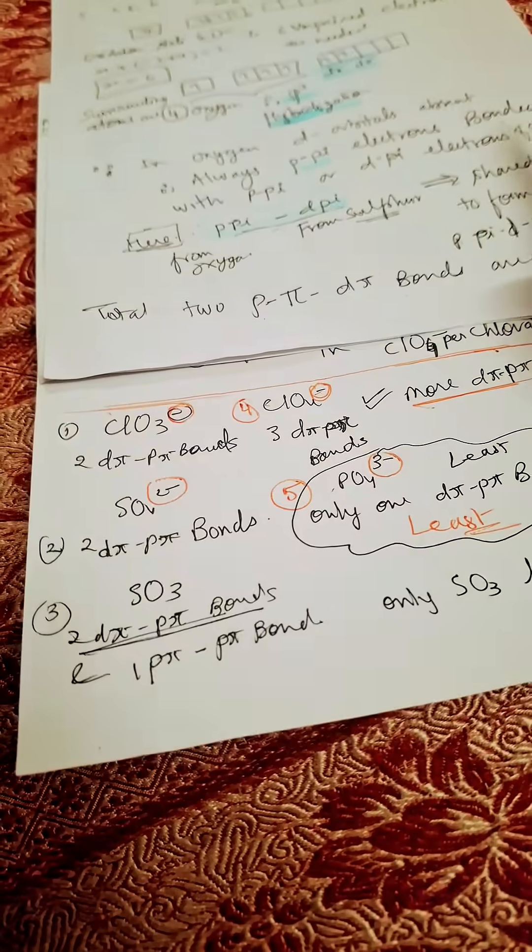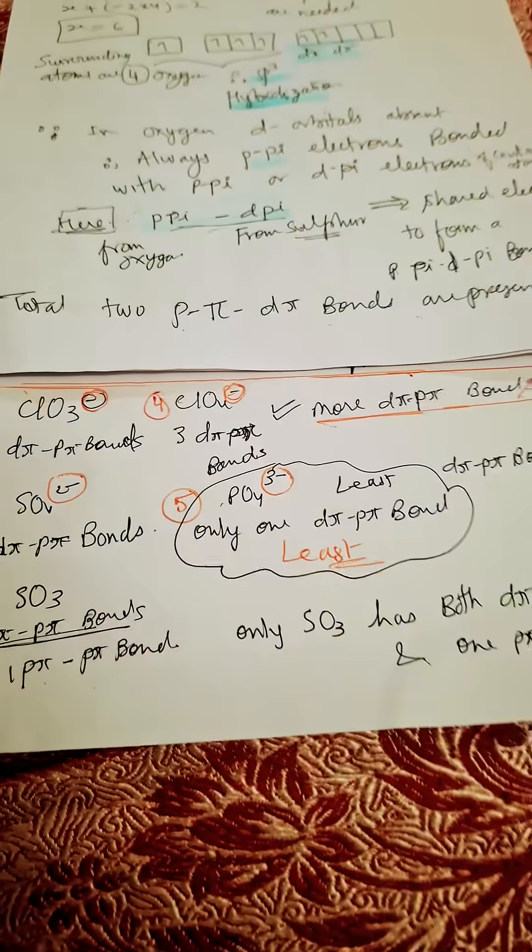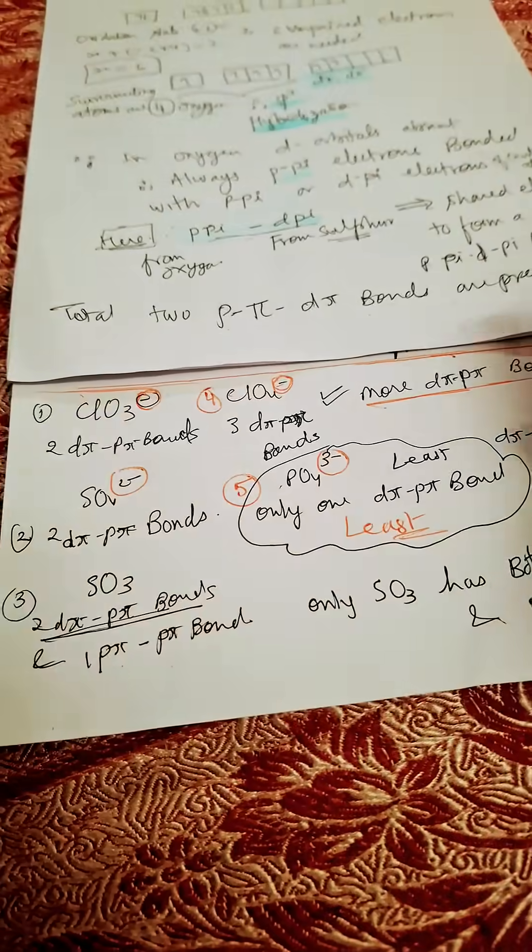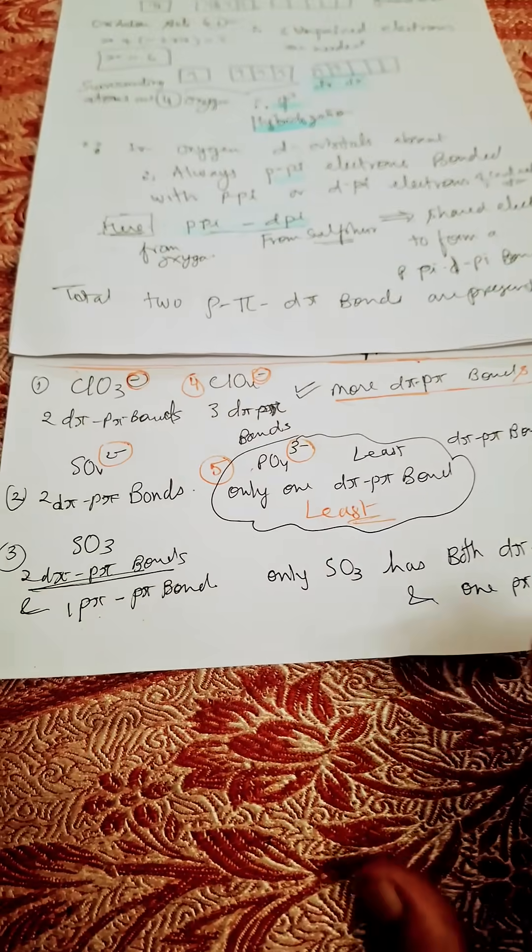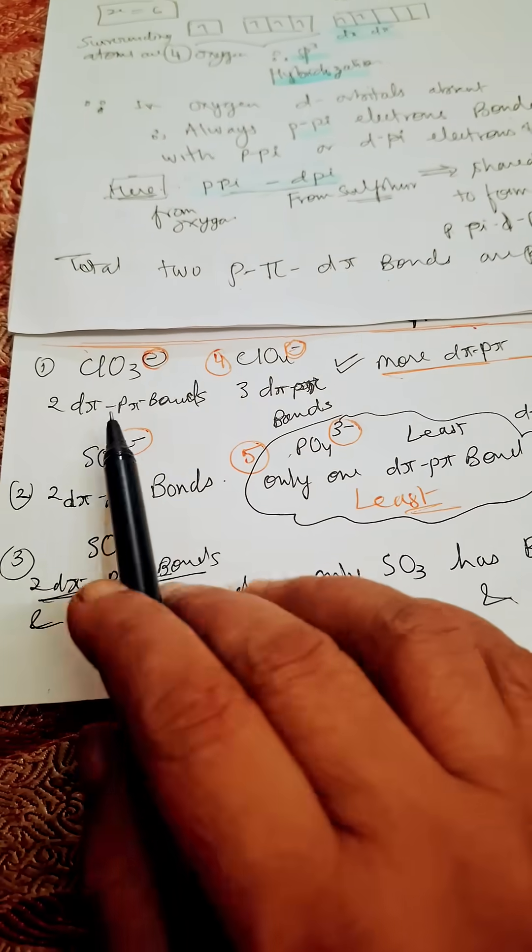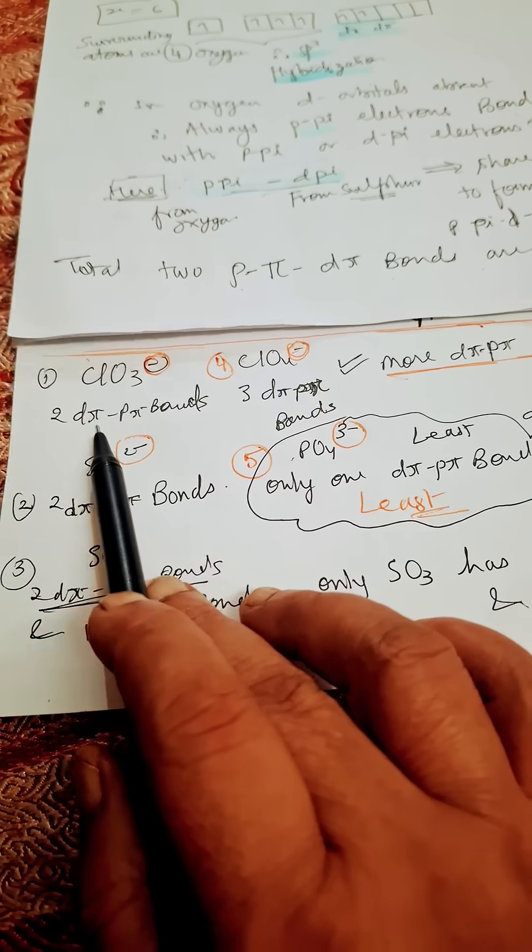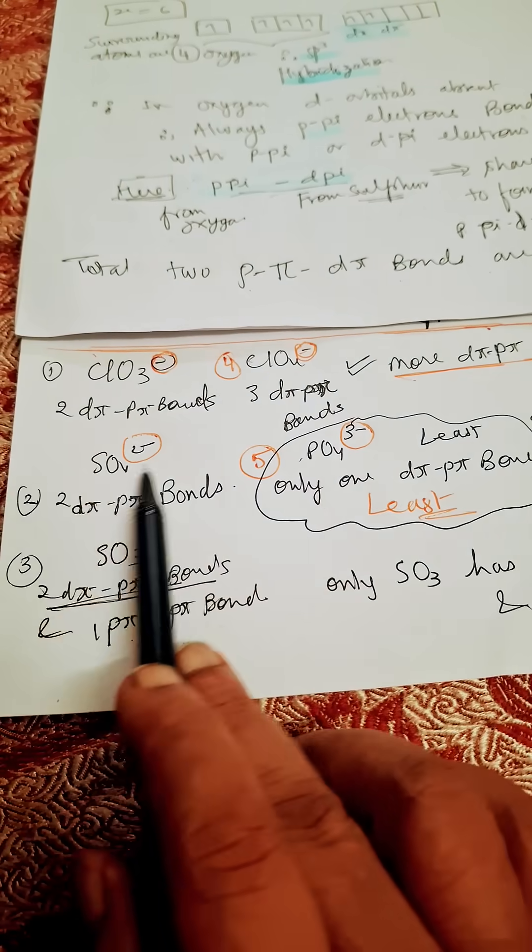In shortcut, I will tell you how easy: make this chart in your table and see it. Always one question definitely will be asked in exam. Chlorate ion: two d-pi p-pi. SO4 2-, sulfate ion: two d-pi p-pi.